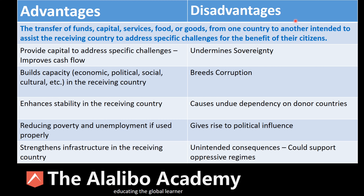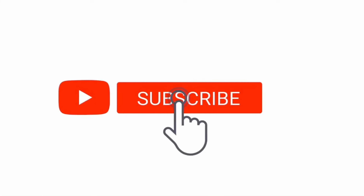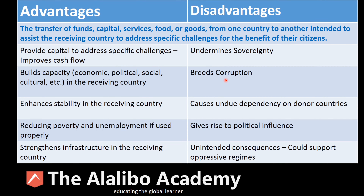On the other side, foreign aid undermines sovereignty. If you're receiving money from other countries, it suggests that you're not able to take care of yourself and that you depend on others. It also breeds corruption — where there's a lot of money circulating without discipline, there's a tendency for people to siphon funds, use them for personal purposes, or lodge them in foreign banks.